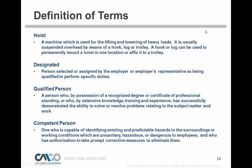A designated person is selected by the employer as qualified to perform specific duties. A qualified person has demonstrated ability through recognized degrees, certificates, or extensive knowledge and experience. A competent person is capable of identifying existing and predictable hazards and has authorization to take corrective measures. Really it comes down to training, training, training — get more training when you think you're trained.